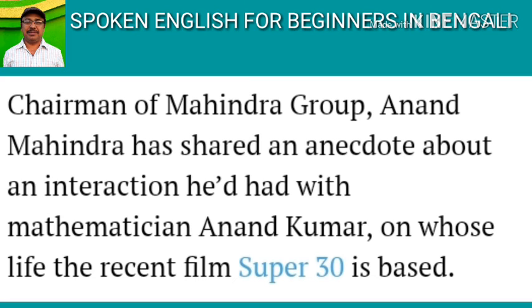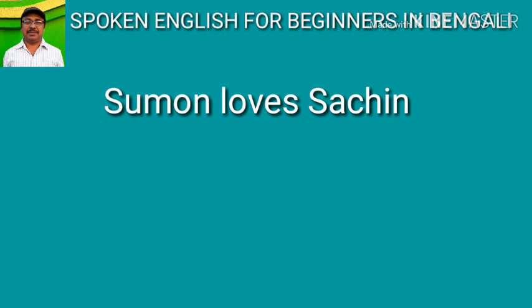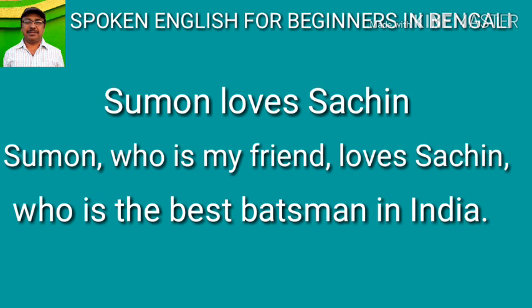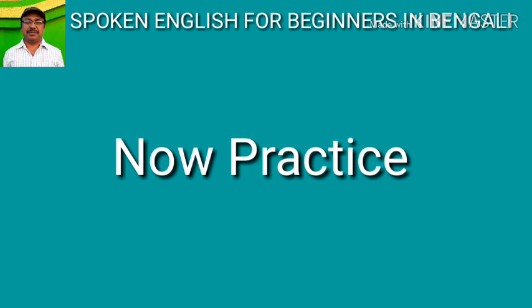Prepositions like after, for, from, with, by — followed by 'which' or 'whom' — can also introduce adjective clauses. For example: Shuman loves Sachin. Shuman, who is my friend, loves Sachin. Shuman, who is my friend, loves Sachin, who is the best batsman in India. So you can use complex sentences in daily conversation also.